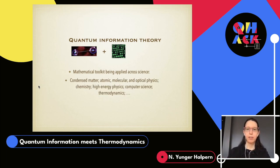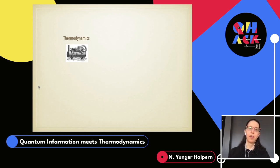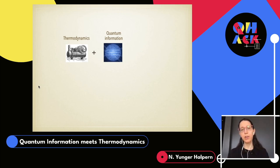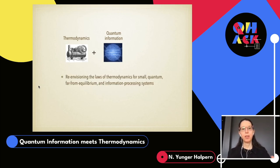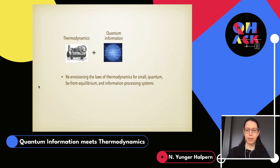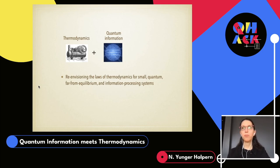These fields include black hole physics, condensed matter physics, computer science, and thermodynamics. We can take the thermodynamics of the 1800s and update it for the 21st century using quantum information theory. At this intersection, there are a number of questions to be asked. The laws of thermodynamics were originally developed in and around the 1800s for large classical systems, many of them at equilibrium. But these laws have proved remarkably robust in extending to small systems, quantum systems, far-from-equilibrium systems, and information processing systems.